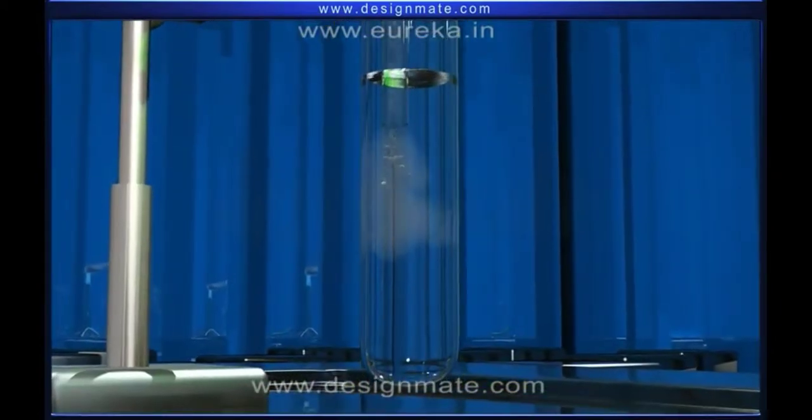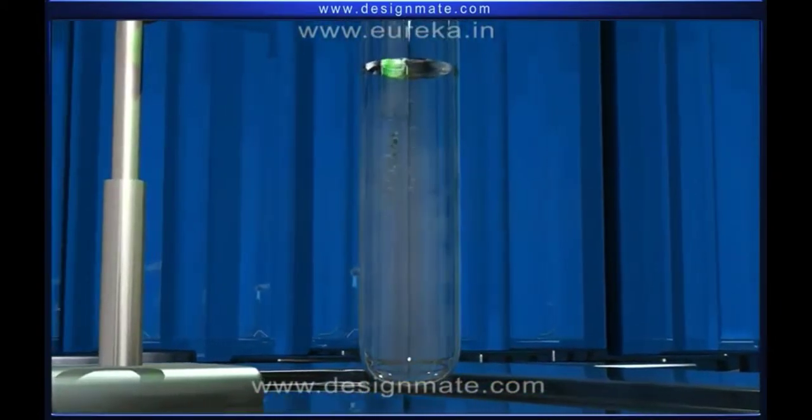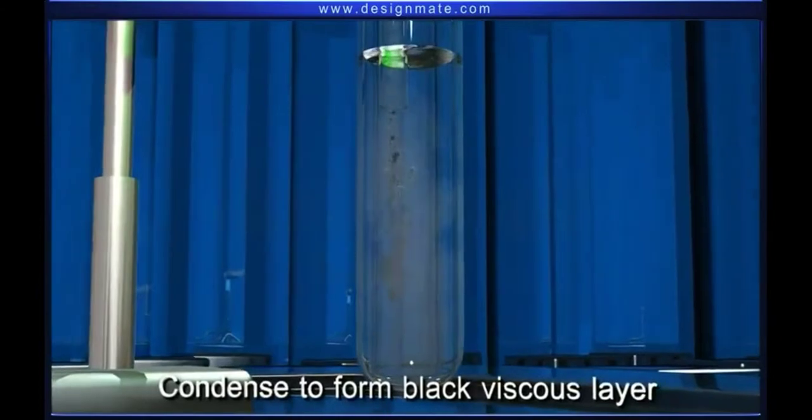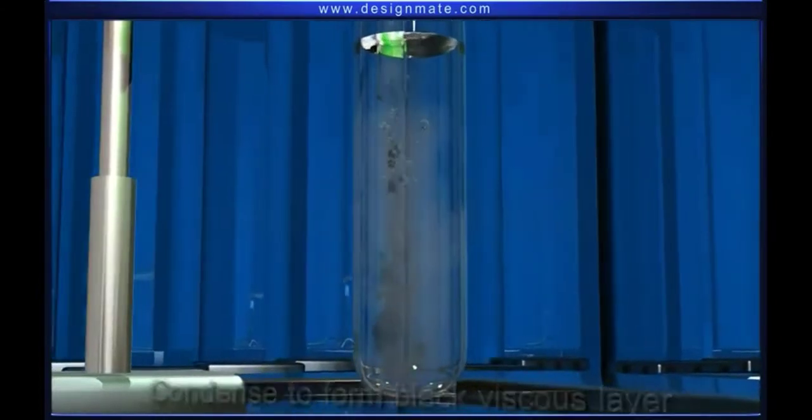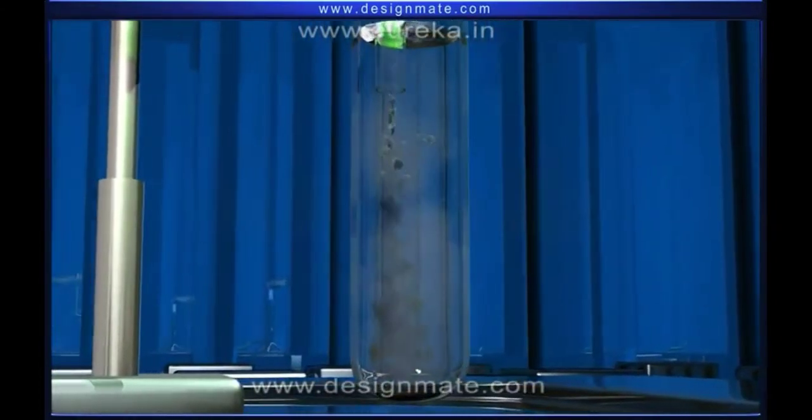After some time, few of these vapors condense to form a black viscous layer below the water level. This is called coal tar.